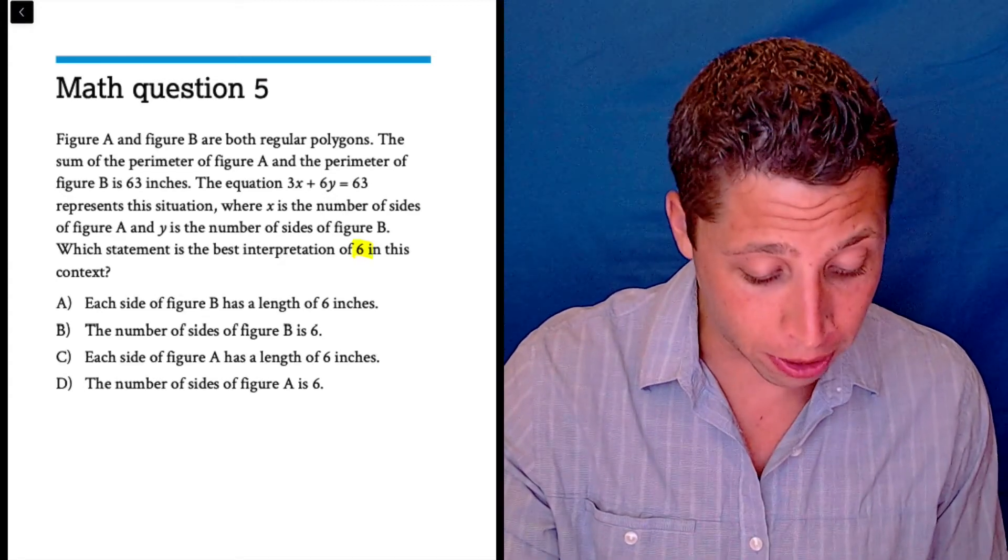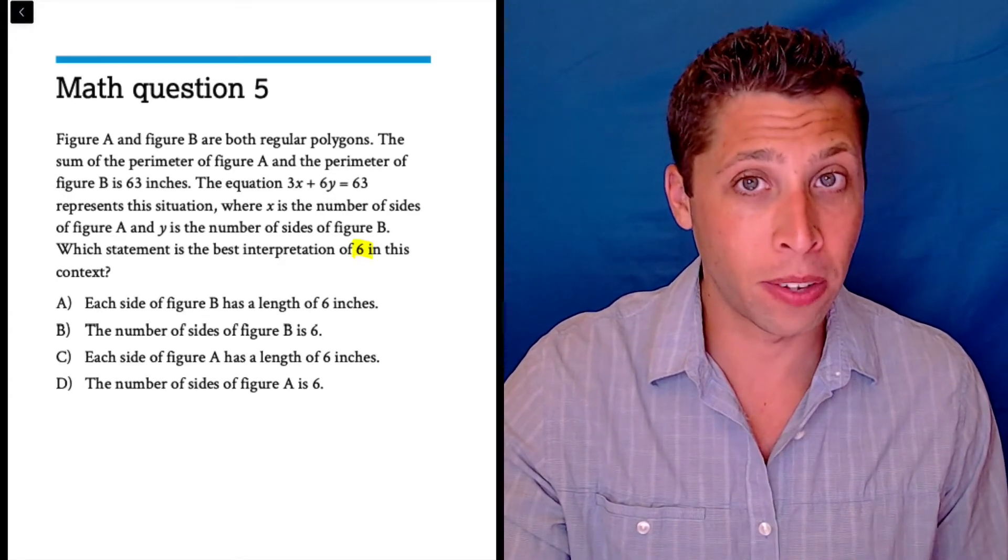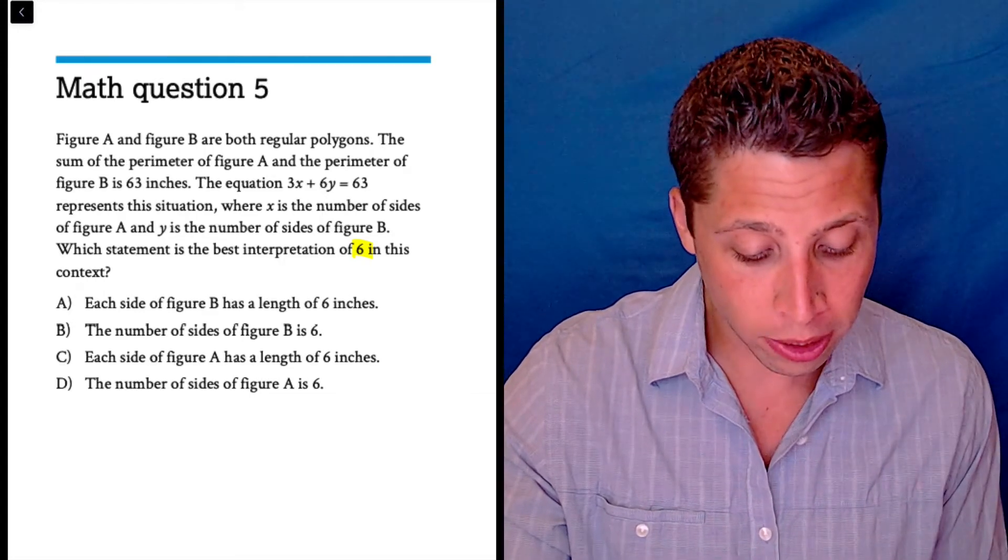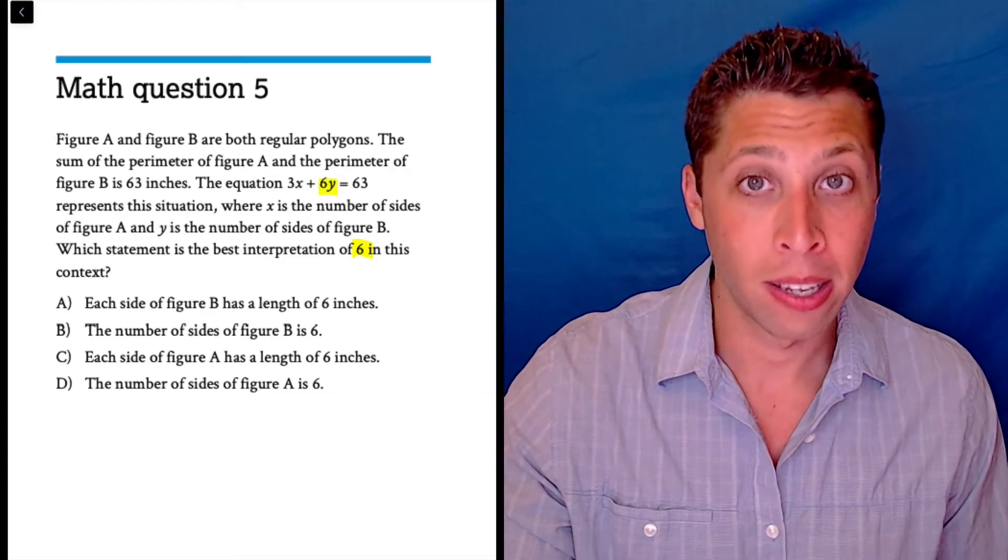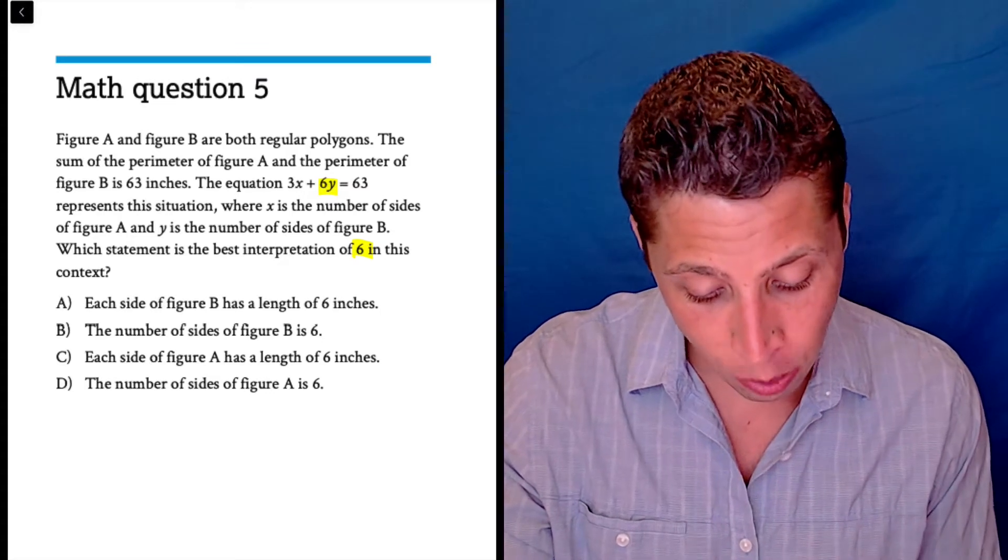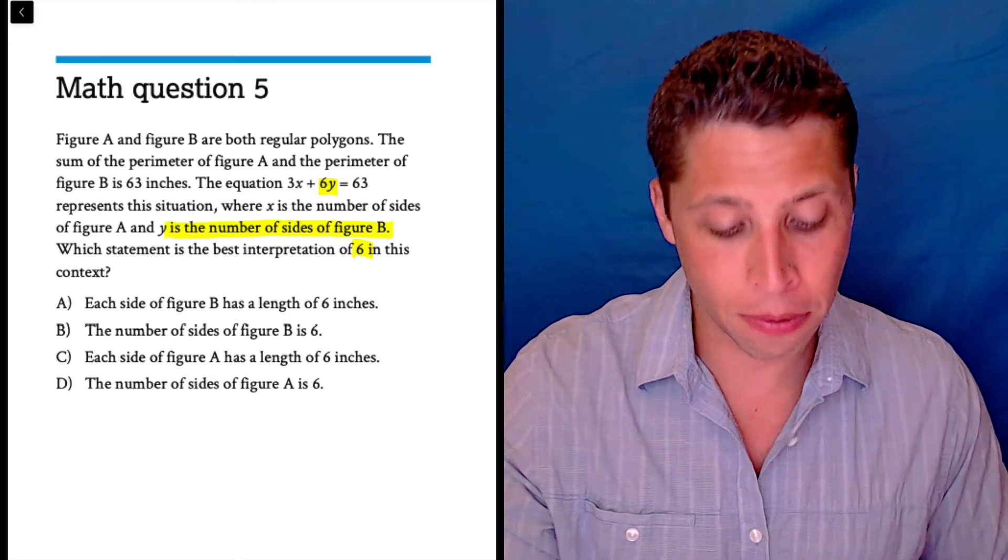So let's just start at the bottom here. Six, that's what I need to figure out. What does the six mean? Well, if I look at the equation, the six is attached to the Y. So maybe we should find out what the Y means, that might be helpful. They say Y is the number of sides of figure B.